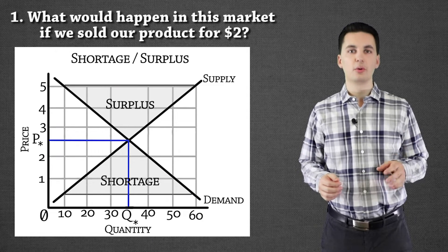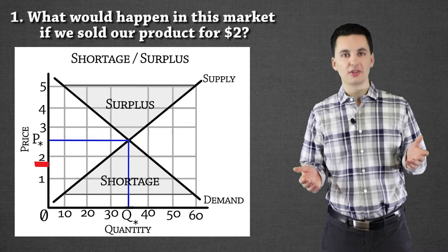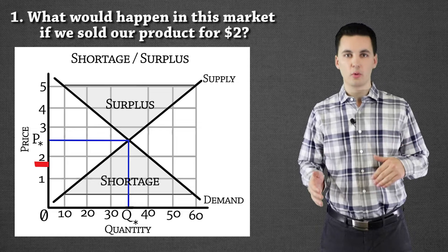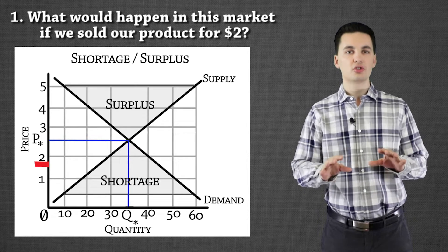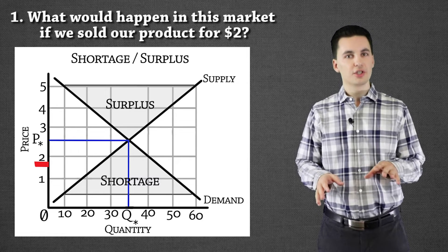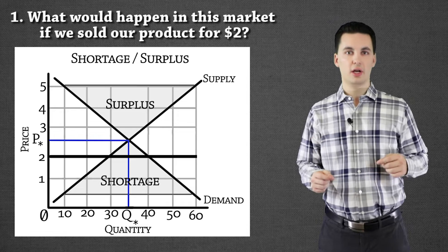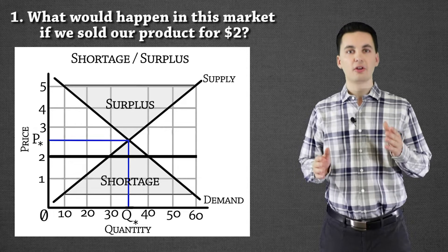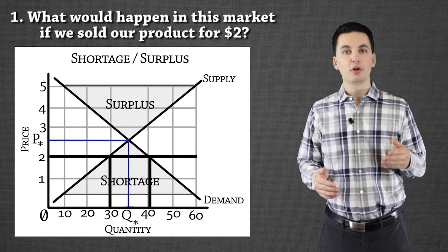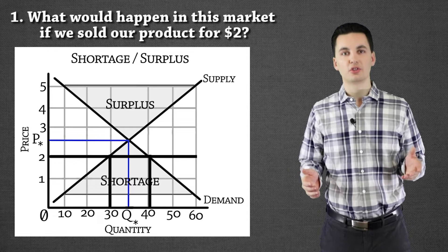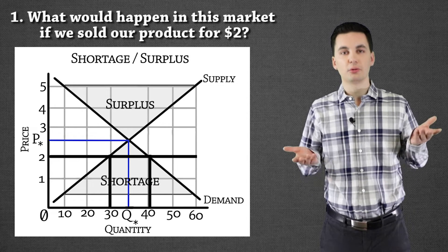The first question asks what would happen if we were selling at $2. The important thing is to only focus on what happens at the $2 price range. Draw a horizontal line across your chart at $2. At $2, demand is at 40 units while quantity supplied is only at 30. So we're going to have a shortage. Only 30 units are being sold but 40 people want to buy — we have a shortage of 10 units, which is the difference between the two.